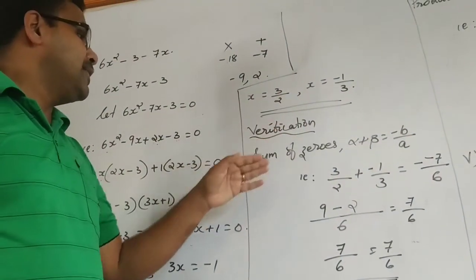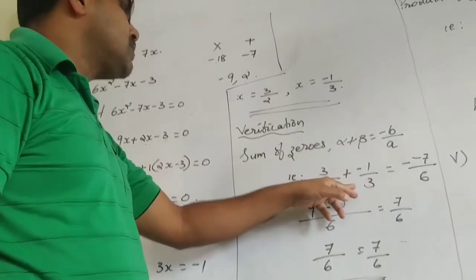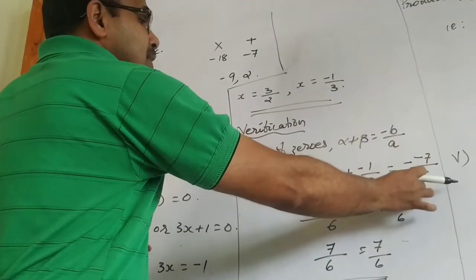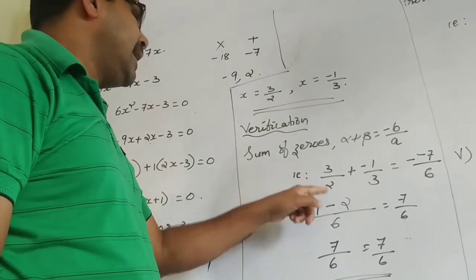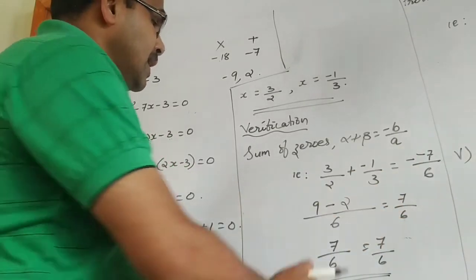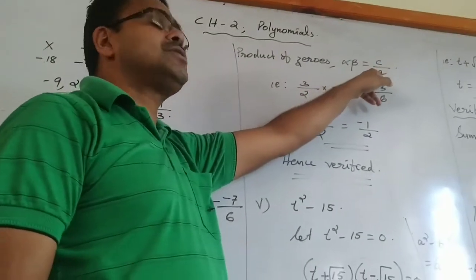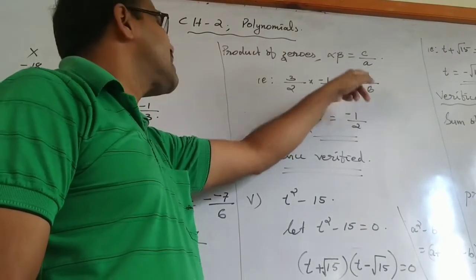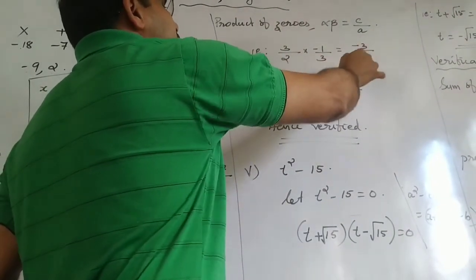Now verification. Sum of zeros: alpha + beta = −b/a. The zeros are 3/2 and −1/3, so 3/2 + (−1/3). Value of b is −7, value of a is 6, so −b/a = −(−7)/6 = 7/6. Calculating LCM of 6: (9 − 2)/6 = 7/6. So 7/6 = 7/6, verified. Product of zeros: alpha × beta = c/a. That is (3/2) × (−1/3). Value of c is −3, value of a is 6: c/a = −3/6 = −1/2. Cancelling the 3s: (3/2) × (−1/3) = −1/2. So −1/2 = −1/2, verified.